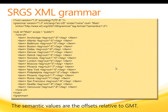The SRGS XML grammar lists 18 cities in the US and Europe. If the caller says the name of one of these cities, the grammar returns the semantic value associated with that city. The semantic value represents the time offset of that city relative to Coordinated Universal Time (UTC). For example, if the caller says Rome, the value returned is 1. This value means that the time in Rome, Italy is one hour later than the time in London or Paris.